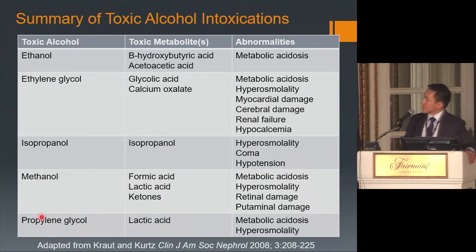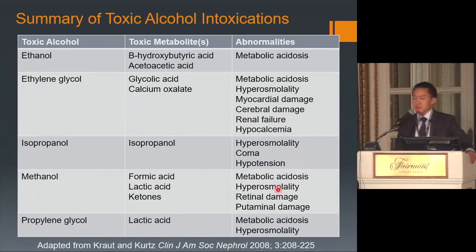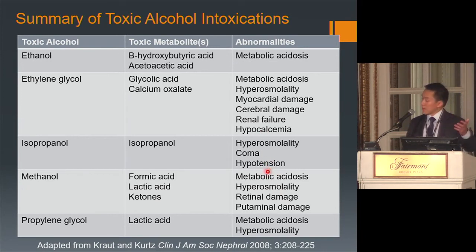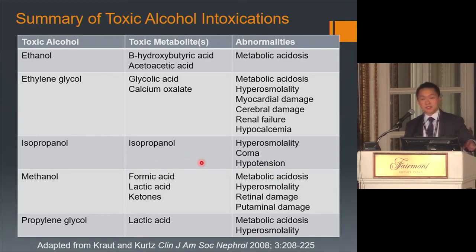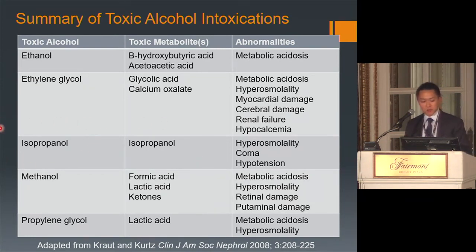A table covers toxic metabolites and clinical abnormalities for various toxic alcohols. Notably, isopropanol generates an osmolal gap when ingested in high quantities but does not generate a metabolic acidosis or anion gap, because its metabolite is acetone — not an acid like those generated by other toxic alcohols.